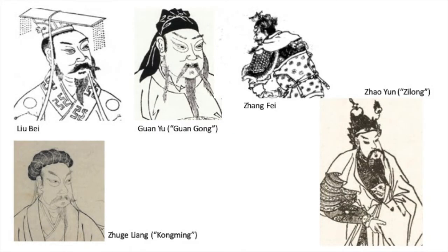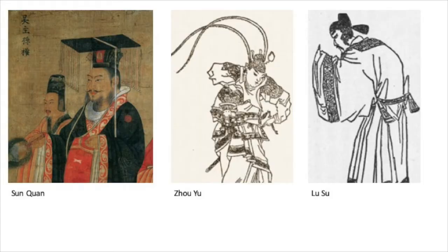Liu Bei is a distant relative to Emperor Xian. His goal was to restore the authority of the Han dynasty. He was assisted by great warriors like Guan Yu, Zhang Fei, and Zhao Yun, and one of the most talented strategists in Chinese history, Zhuge Liang, better known by his courtesy name Kongming. Sun Quan was a powerful young warlord ruling the southeastern province of China. He was also assisted by smart people like Zhou Yu and Lu Su, and his defense relied on his powerful fleet in the Yangtze River.